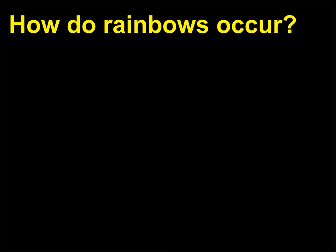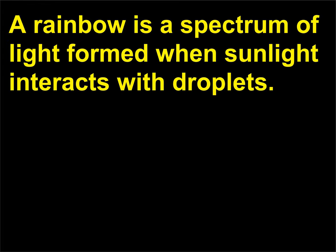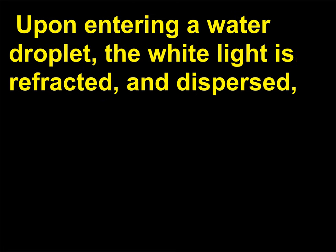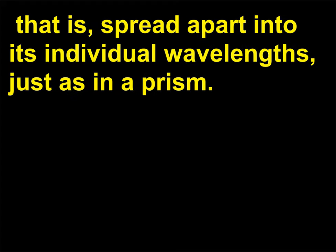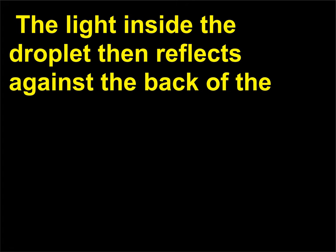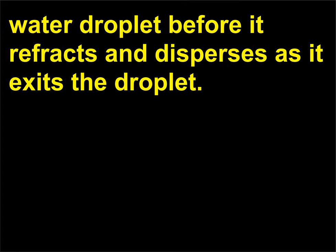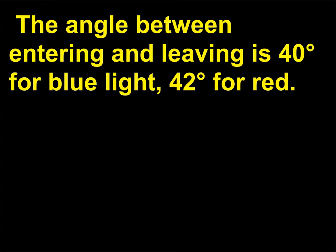How do rainbows occur? A rainbow is a spectrum of light formed when sunlight interacts with droplets. Upon entering a water droplet, the white light is refracted and dispersed, that is, spread apart into its individual wavelengths, just as in a prism. The light inside the droplet then reflects against the back of the water droplet before it refracts and disperses as it exits the droplet. The angle between entering and leaving is 40 degrees for blue light, 42 degrees for red.